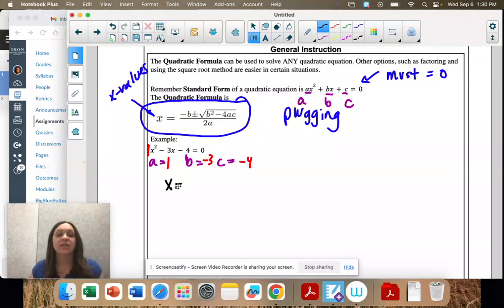Okay, so x equals negative b. I'm substituting in b, negative 3. Plus or minus the square root. And then b again, b squared. So negative 3 squared.